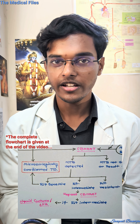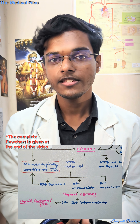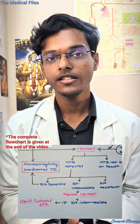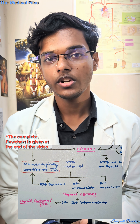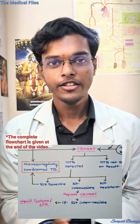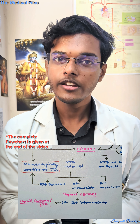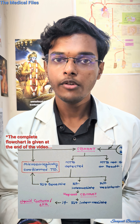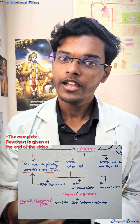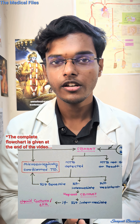In the result of CB NAAT, if MTB is detected, you shall go for rifampicin sensitivity testing. If the patient is sensitive for rifampicin, we shall also call it a microbiologically diagnosed tuberculosis patient. If the result shows intermediate sensitivity for rifampicin, you will repeat the CB NAAT.